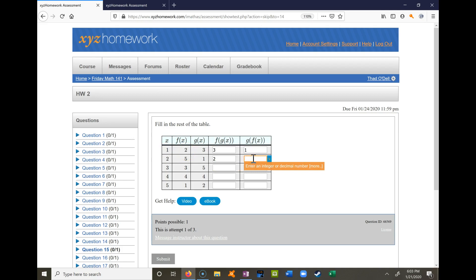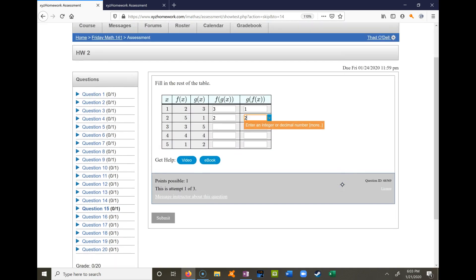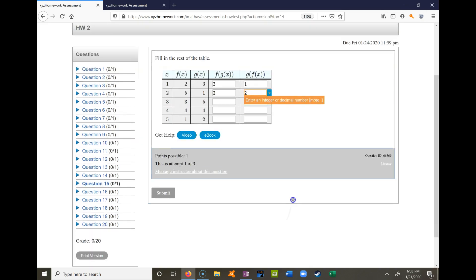Hopefully you're getting the hang of this. So this one says I'm plugging two into f first. When I plug two into f, I get five. So then I want to evaluate what g of five is. I'm going down to five, going over to g, and it looks like it's two. So that would be two. So that's the idea. Hopefully this is helpful. Part of the problem with this is just understanding the table because a lot of us are not used to looking at tables. So give that a try on your side and let me know if you have any problems.